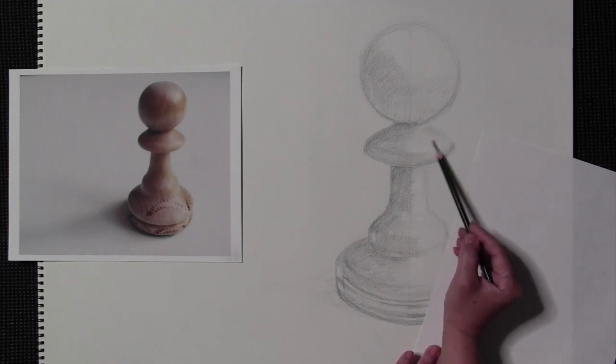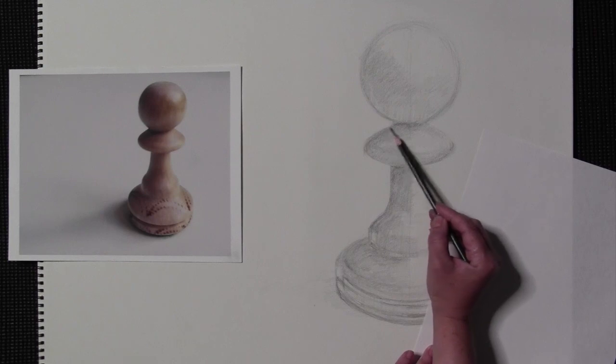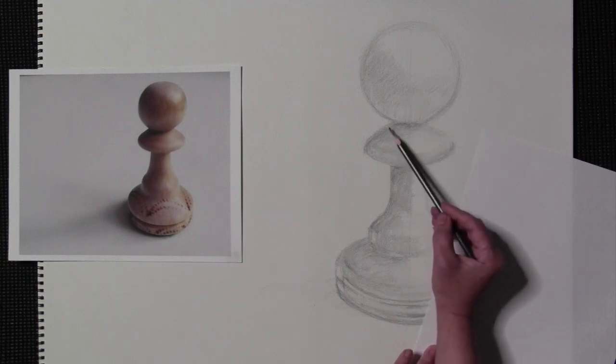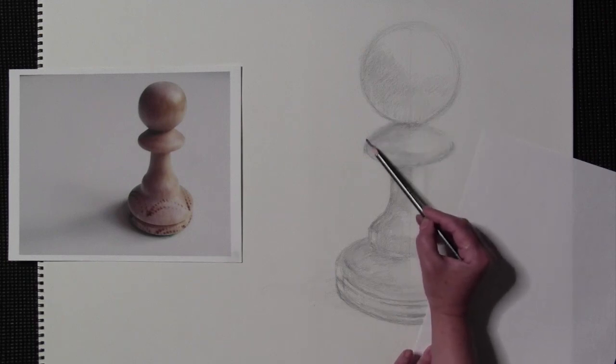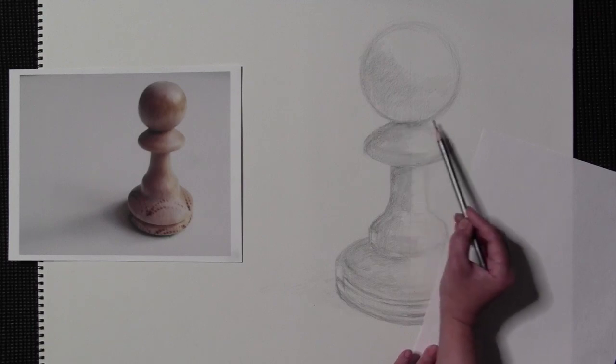Even on the highlight side I'm still adding a little bit of shading. I'm noticing that this base when I look over here is connecting just a little bit more than it is my drawing, so I'm gonna adjust that.